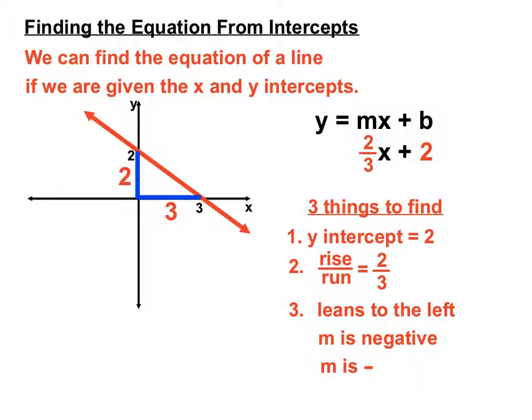So that's our third thing there. The m is negative. So instead of 2 thirds x, we're going to have minus 2 thirds x because any line leaning to the left has a negative gradient.